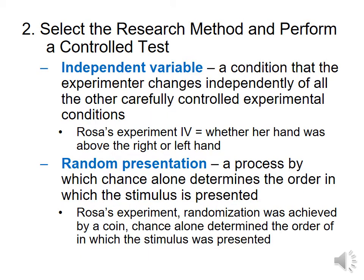Once you have your hypothesis, you need to actually run your experiment. Your independent variable is going to be the thing that changes within your experiment, and it's in your experimental condition. If given the opportunity, you want to have the presentation of that variable be as random as possible. In class, we looked at Rosa's experiment on therapeutic touch — whether or not people could sense the human energy field by placing her hand over their left or right hand. That was her independent variable. To ensure that a pattern didn't form and to make sure the presentation was random, she would flip a coin to determine whether her hand would go over the left or right — it prevented people from guessing her pattern.